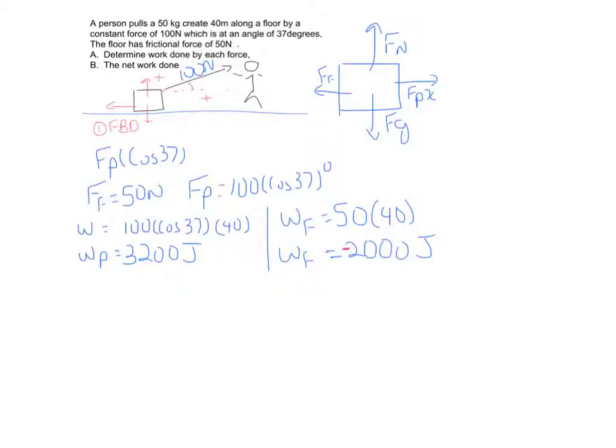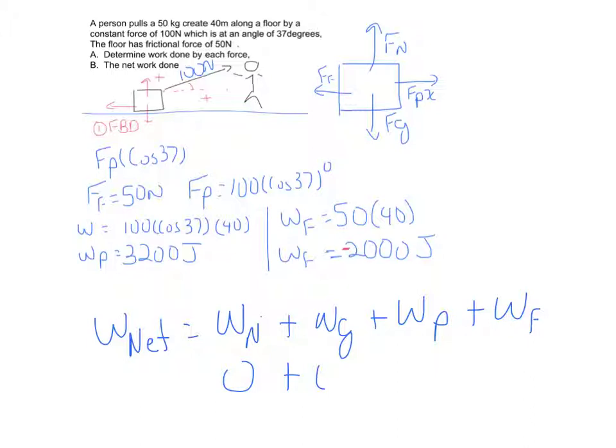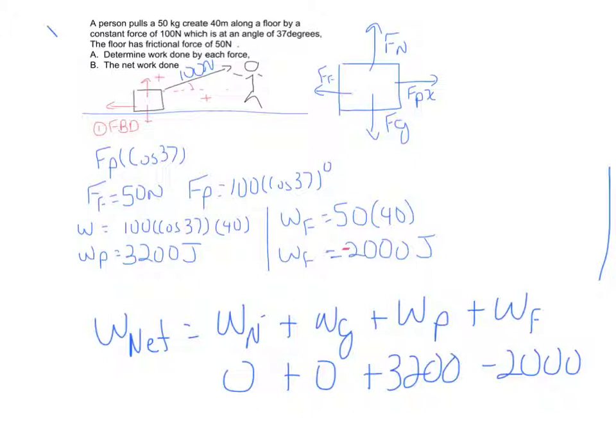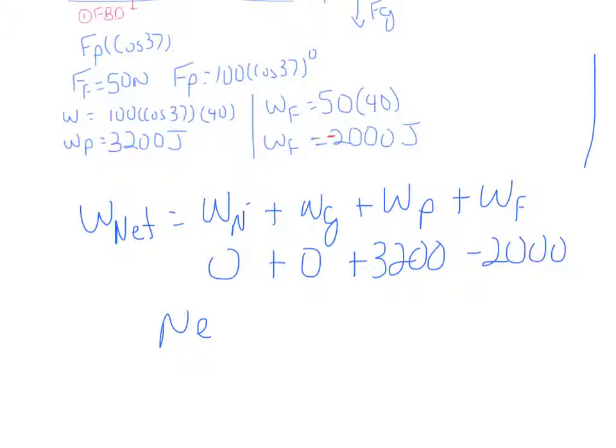So the net work equals the work done by the normal force plus gravity plus the push plus friction: 0 plus 0 plus 3200 minus 2000. My net work equals 1200 joules.